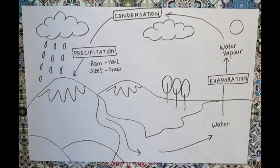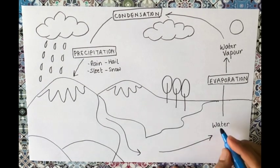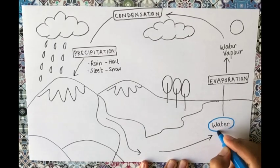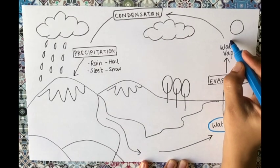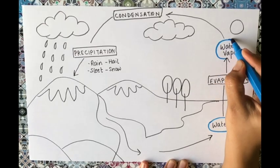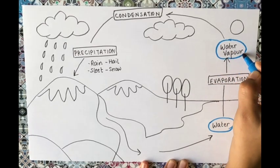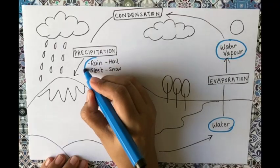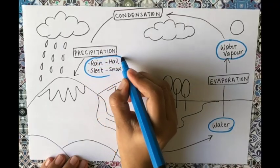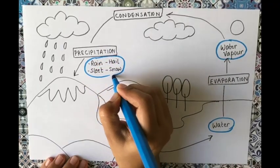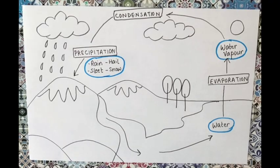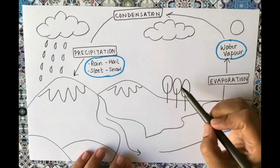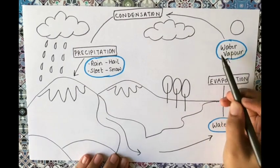All the snow melts and forms rivers, and rivers drain the water back to the sea and ocean. In this way the water cycle repeats itself. The key forms in which we see water in the water cycle are: liquid water, water vapor, rain, hail, sleet, and snow.